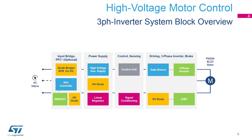In the control unit we very often have a microcontroller such as the STM32. Signal conditioning is required to interface the microcontroller with the environment. On the right side we have the output stage with gate drivers, inverter, and brake.